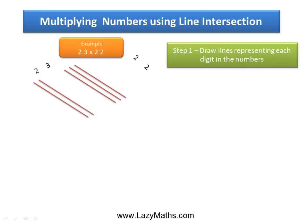The next is 22. For each of these two digits, we draw 2 lines each, as shown.